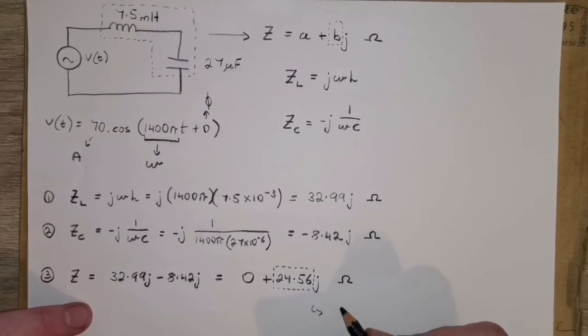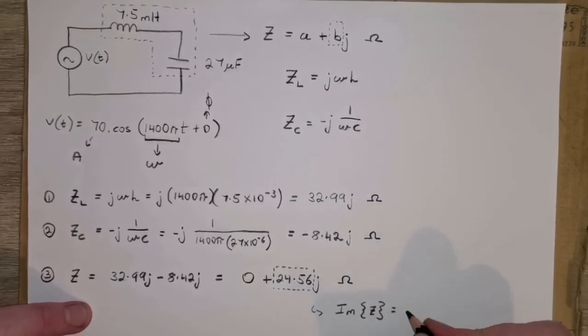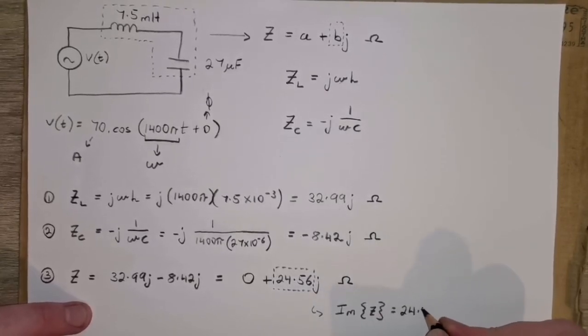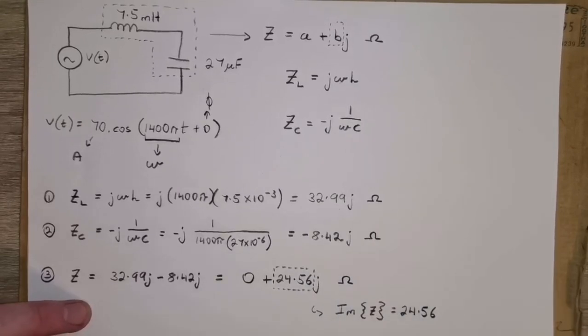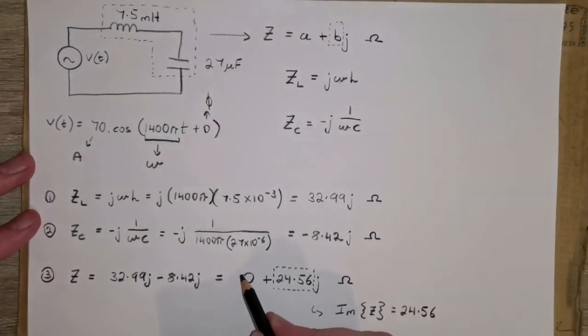And that would be the value there. What we could say here is that the imaginary part of our total impedance is 24.56. And if you did have a resistor in this circuit, you would see a value show up here in the real part. But we don't for this example.